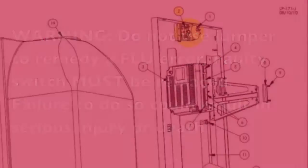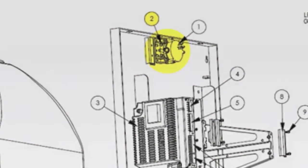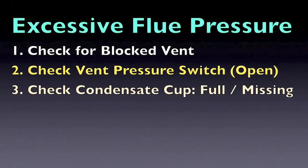The blocking code FLU is tied in series with the condensate float, flue pressure switch, and condensate cup engagement switch only on the MC boilers.